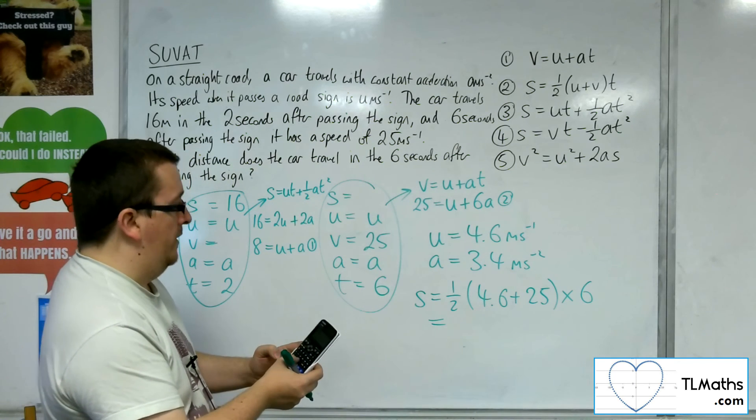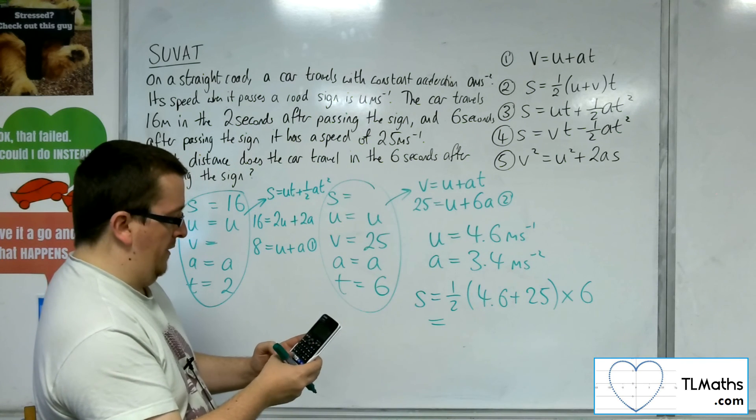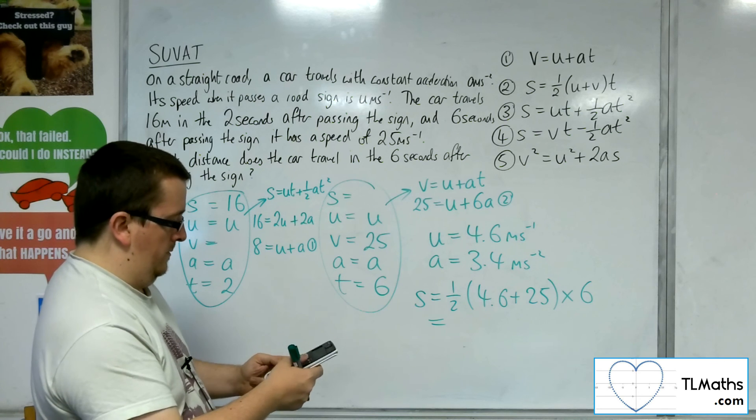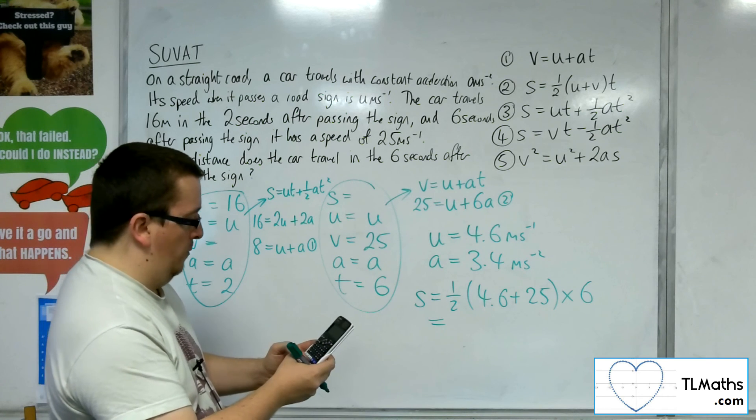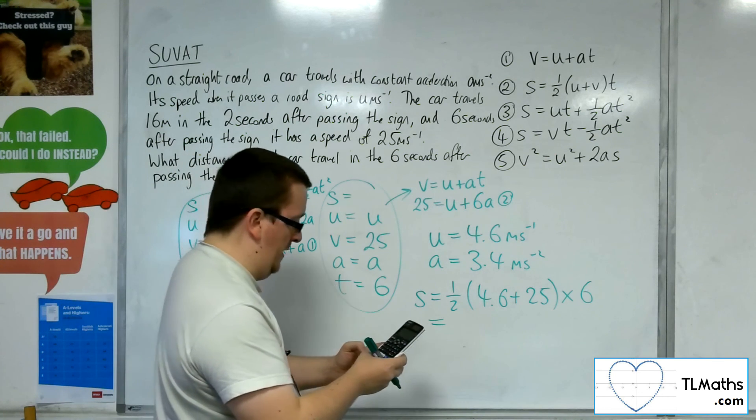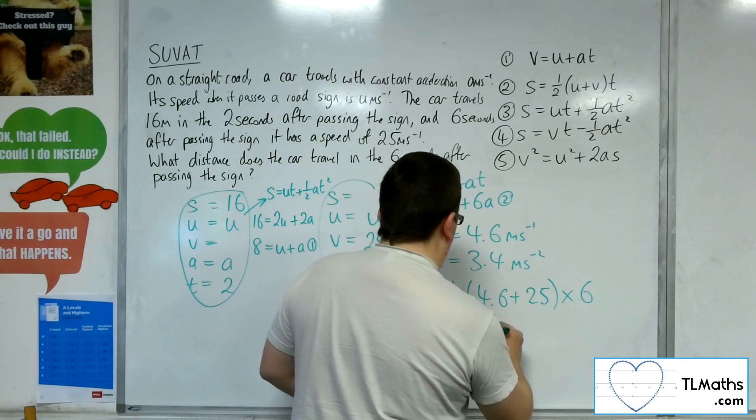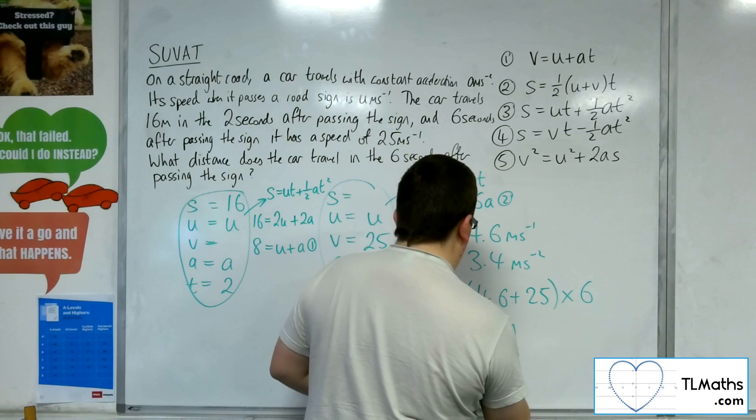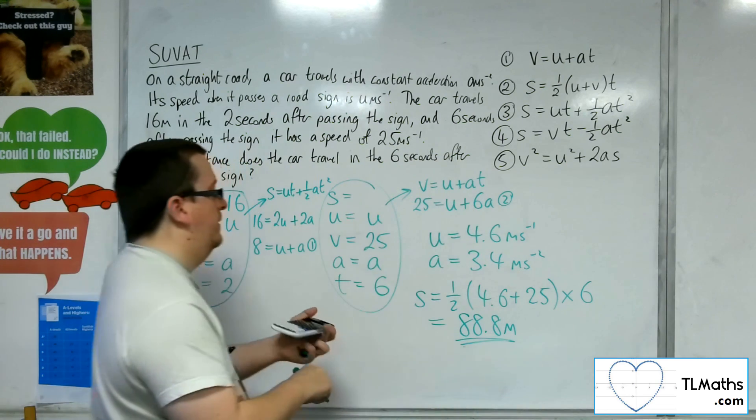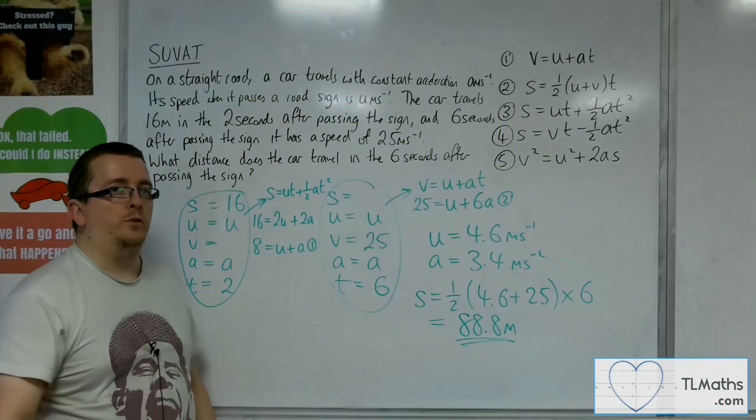So 0.5 times 4.6 plus 25. 0.5 times 4.6 plus 25, and then times that by 6. And we get 88.8 meters. And that is the answer I was looking for.